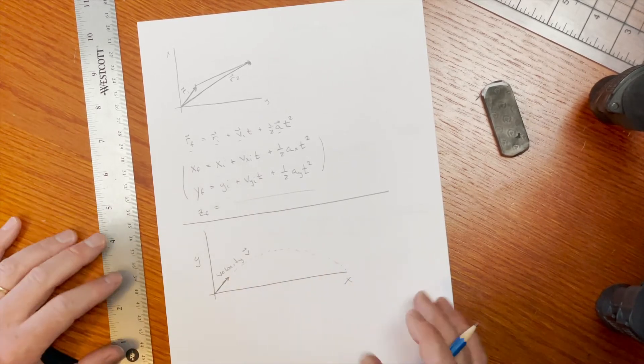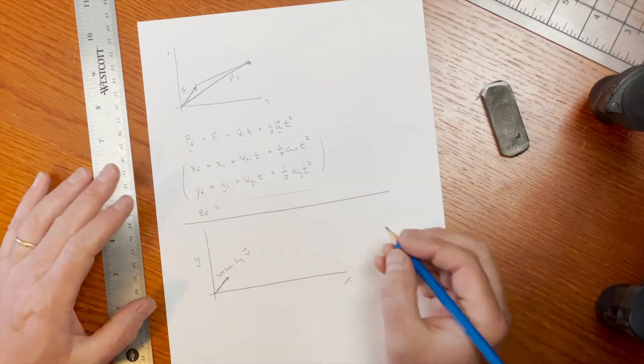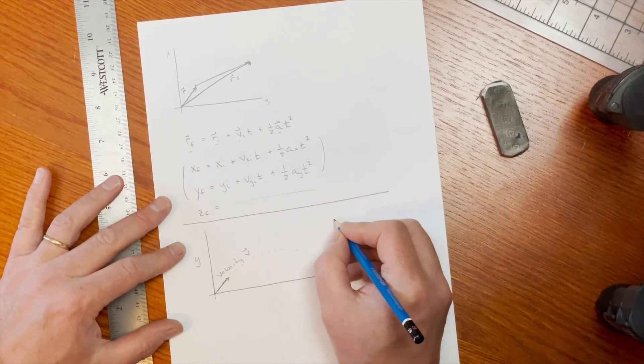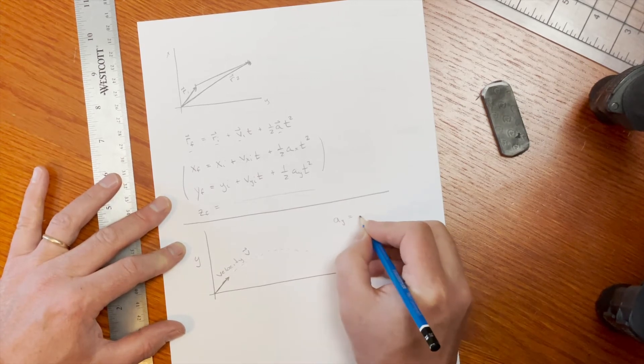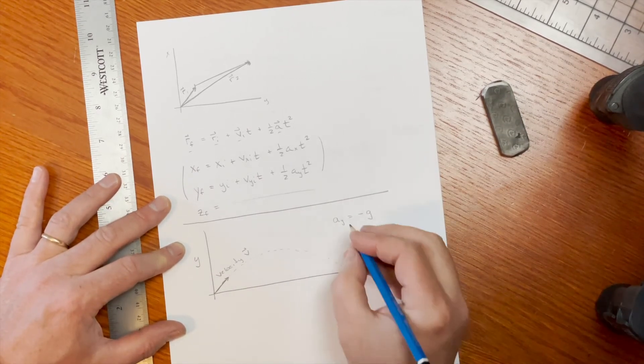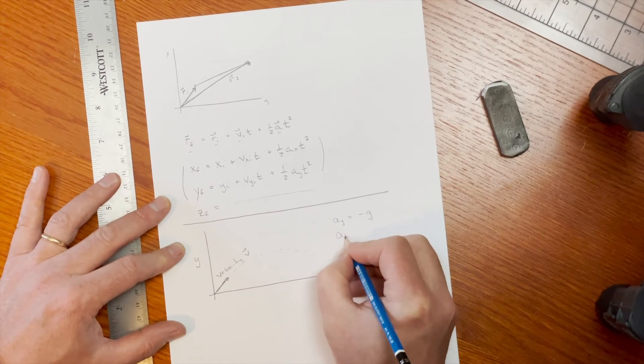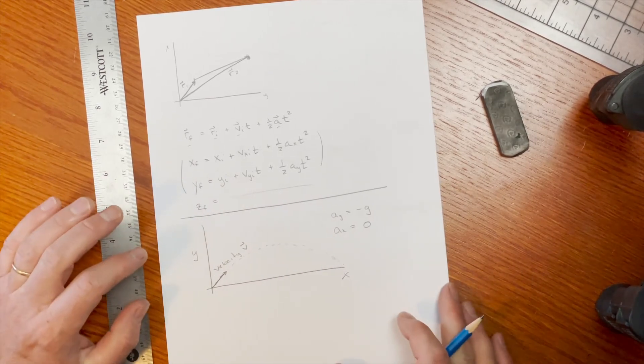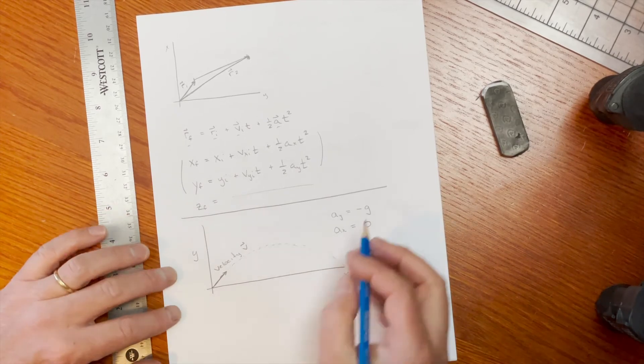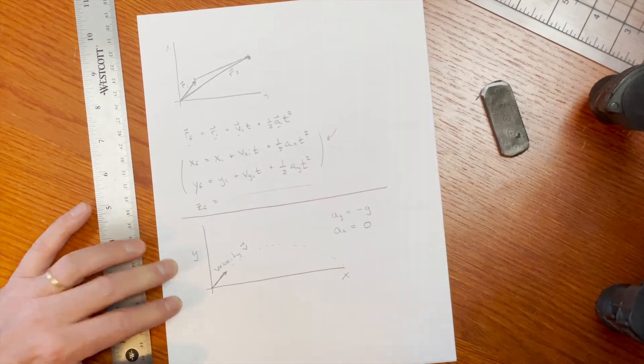Now in this case, with this particular projectile motion, we have our acceleration in the y dimension is just equal to minus g, like we had before. And our acceleration in the x direction is equal to zero because we have no wind resistance, we have no other accelerations acting. So that means I can take these two equations and write them down in the special case of projectile motion.